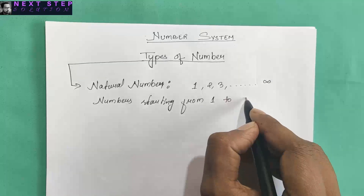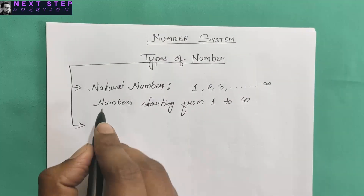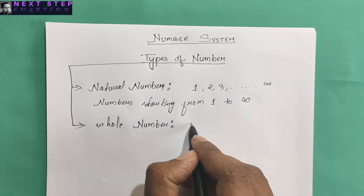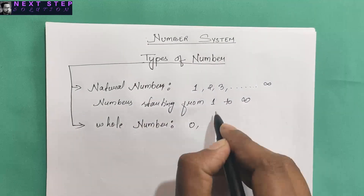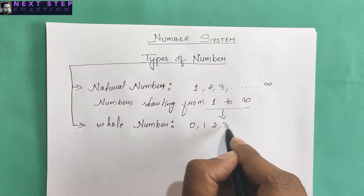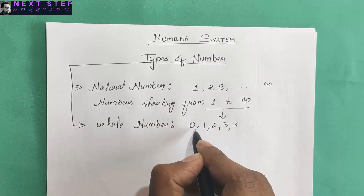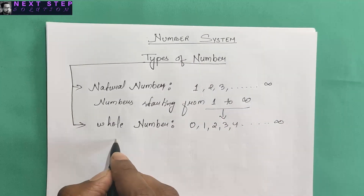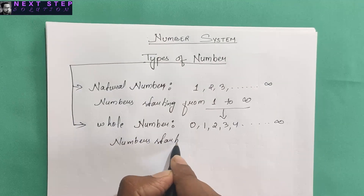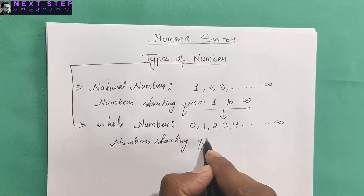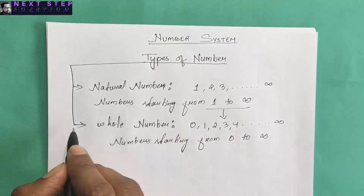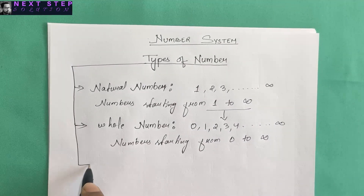The next is whole numbers. Whole numbers start with zero and continue with one, two, three, four — the same as natural numbers but including zero. So whole numbers start from zero and go on till infinity.